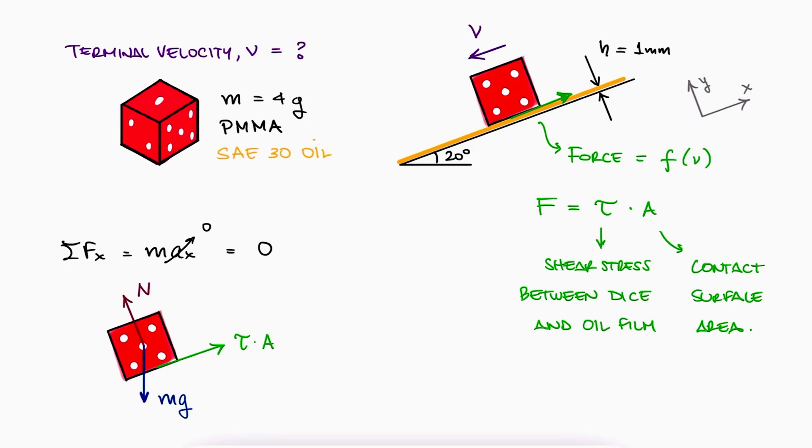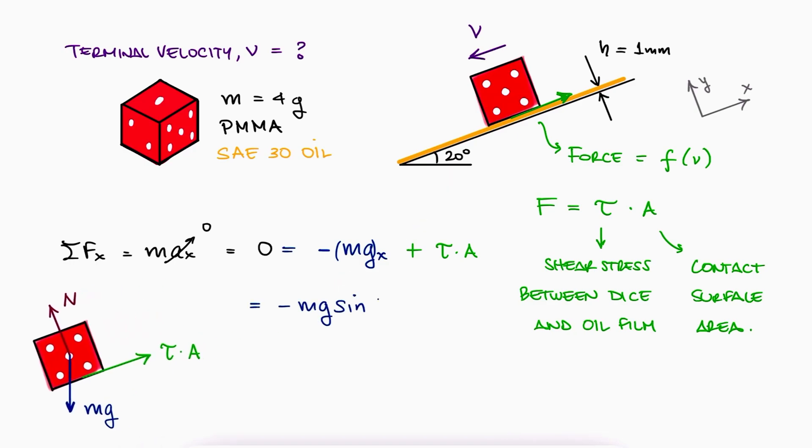The sum of forces in the inclined direction would be equal to the component of the weight in that direction, negative, plus the shear force, product of the shear stress times the contact area. The component of the weight in that direction would be the opposite side of the 20 degree angle, meaning mg sine of theta.